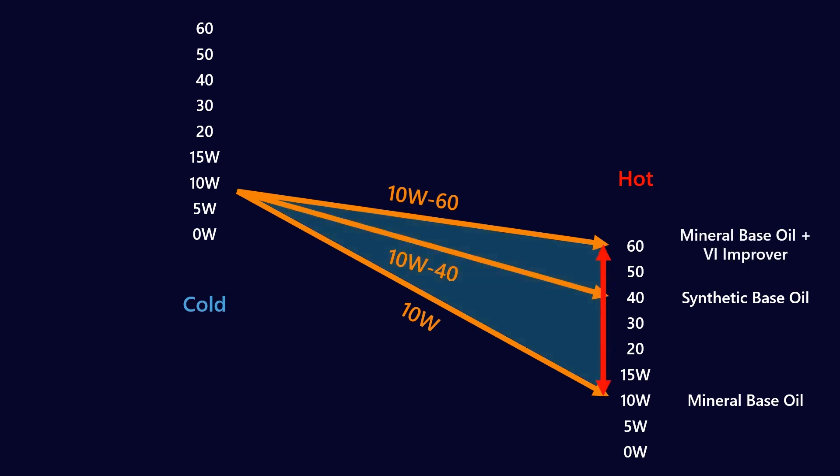We can achieve a 10W60 by adding VI improvers to a mineral base oil. We would just need to add a lot more VI improvers to get from a 10W mineral base oil to a 10W60 finished lubricant.